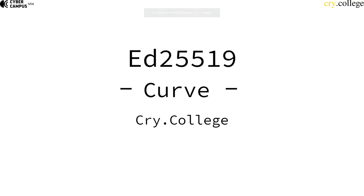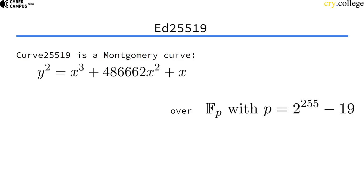So let's talk about the curve ED25519. Curve 25519, as we've learned, is a Montgomery curve over the field Fp with p being 2 to the power of 255 minus 19, hence the name.